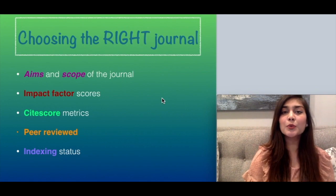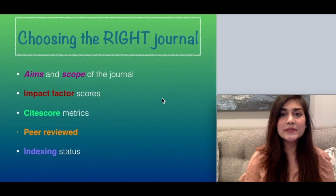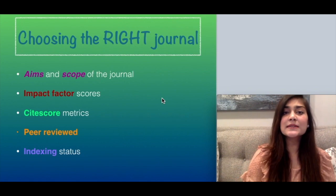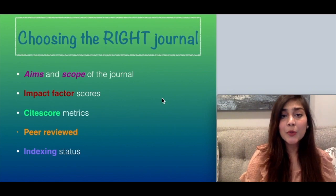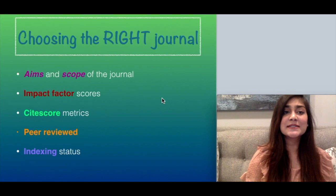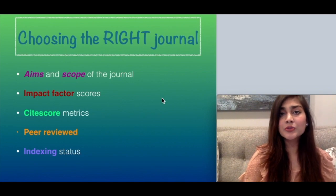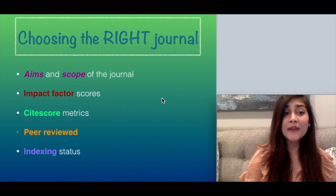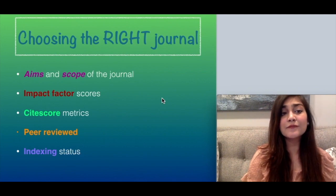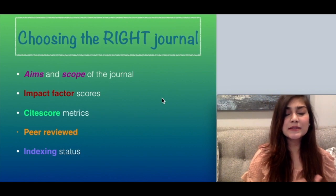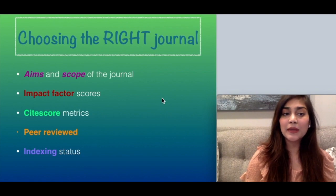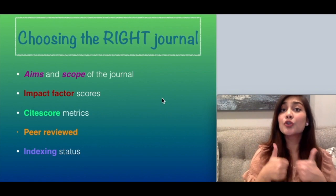There are five factors to look at when choosing a journal. First, the aims and scope — check if your research aligns with the journal. Second, the impact factor, which measures how frequently the average article in a journal has been cited over a span of two years. Third, the cite score metric — average citations per document over four years. Fourth, peer review, meaning articles are evaluated by editors and expert scholars. Fifth, indexing status — for instance, a PubMed-indexed journal indicates good quality.